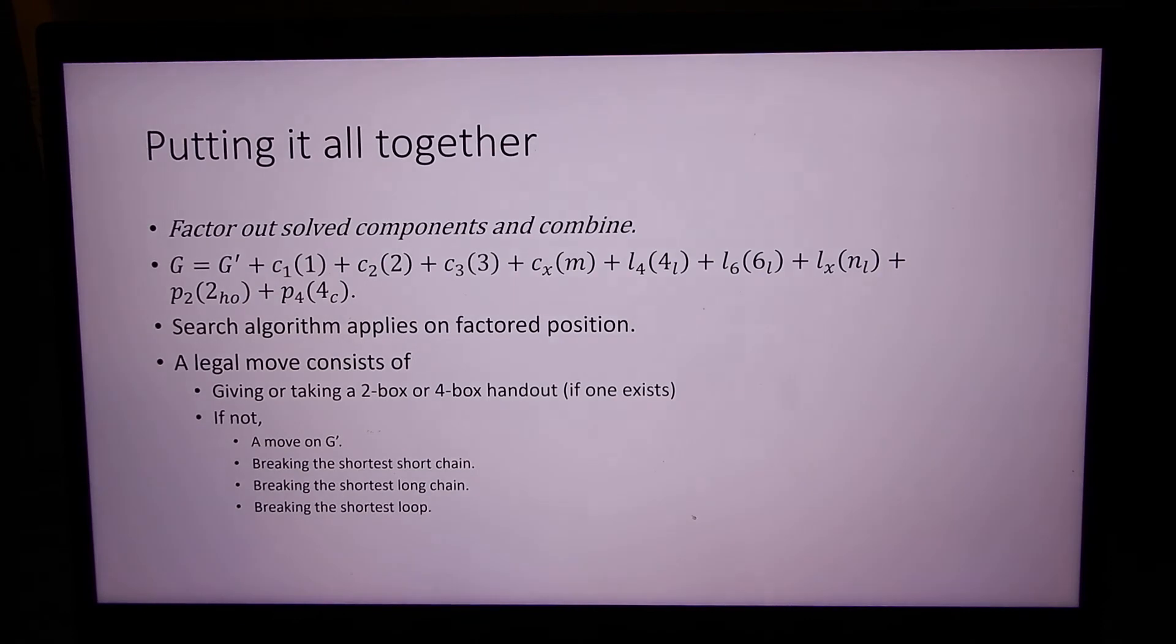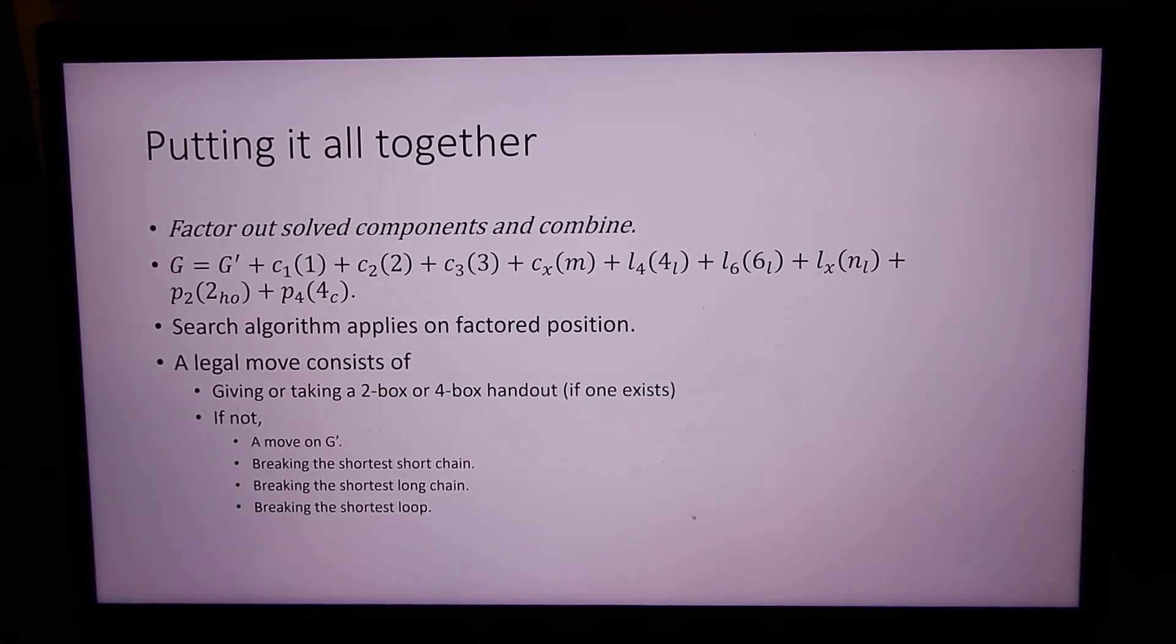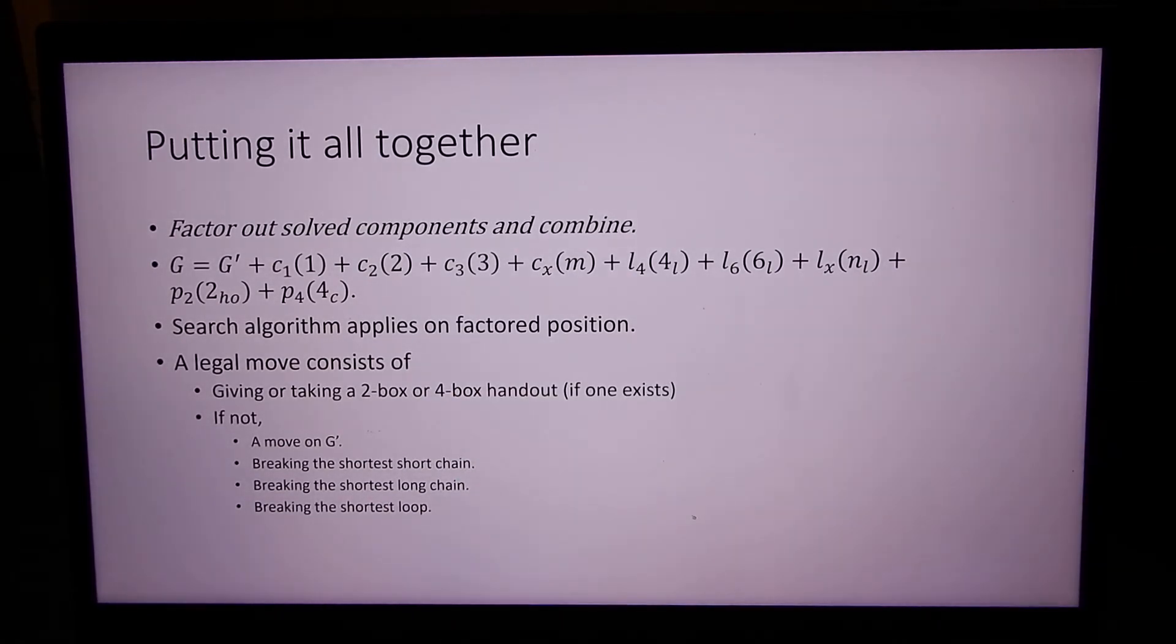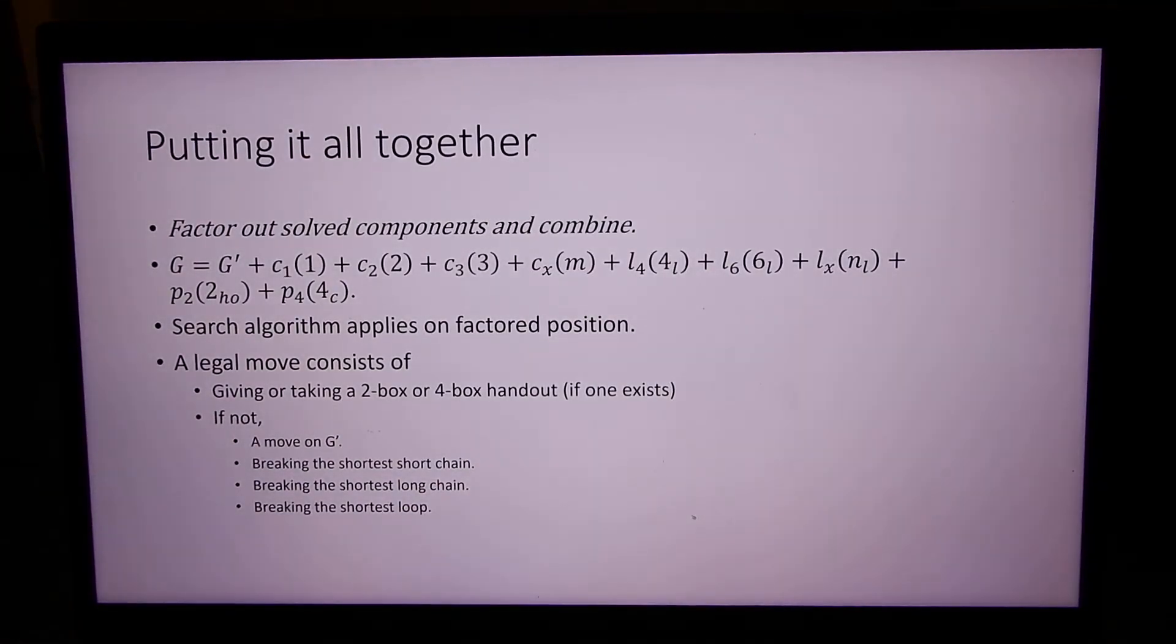Now, what does a legal move on G consist of? Well, if a handout is already given, we've got to give or take it. We can take all the boxes, or we could give the boxes to the opponent. If not, what are the possible optimal moves we can make? Obviously, a move on G prime because we don't know much about it.